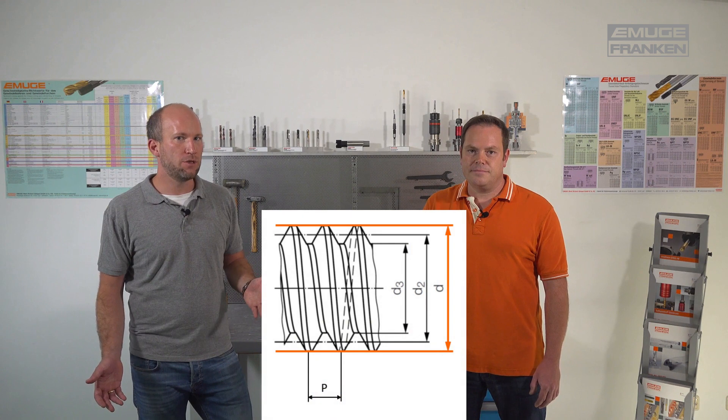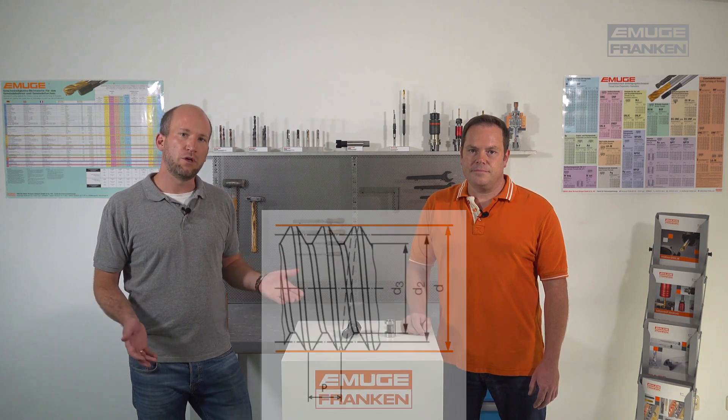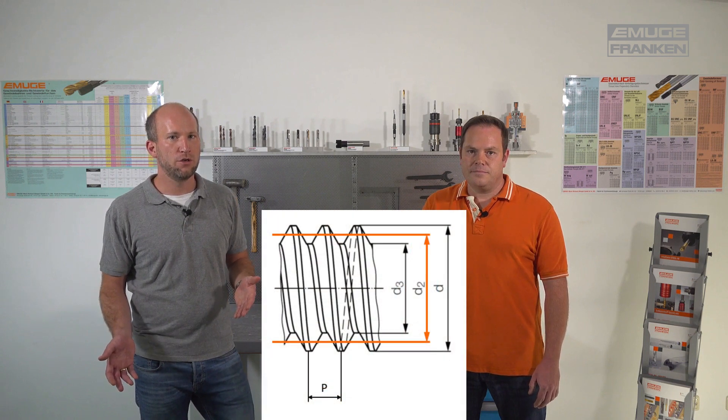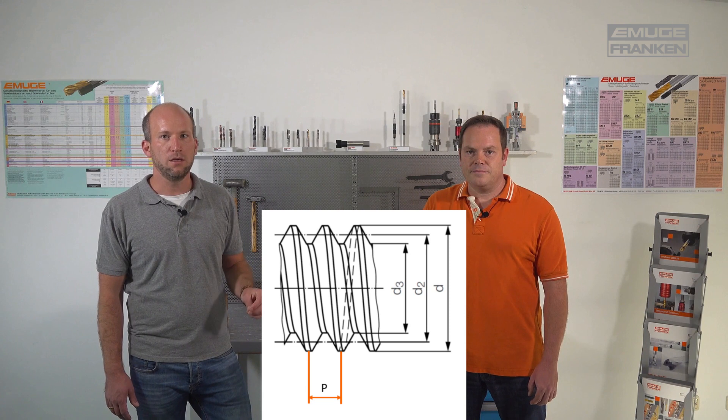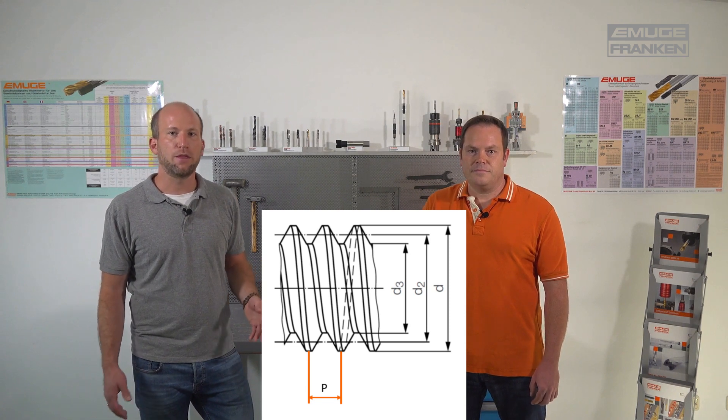This is similar with external threads. There is also a major diameter — the nominal dimension — a pitch diameter, and a minor diameter. Dimensions are defined with small letters, and the pitch P is also defined by the path of one complete revolution.